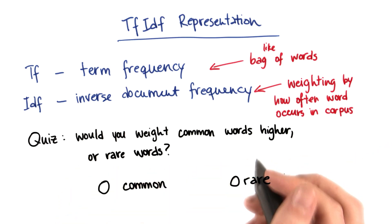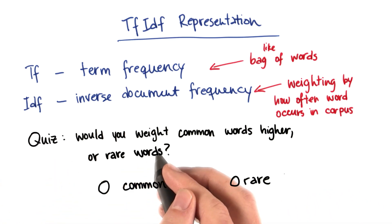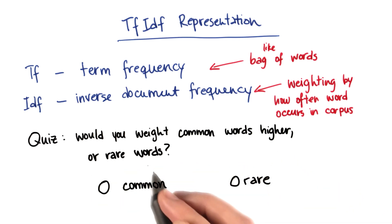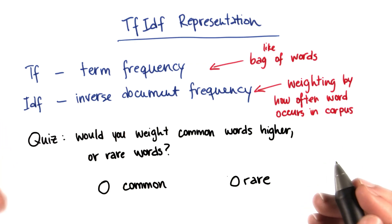The question is this: What do you think makes more sense if you want to be extracting information from these words? Will you give a higher weight to the very common words that occur in many, many documents? Or would you give a higher weight to the rare words, the words that might only occur in, let's say, 10% or 1% of the documents that are present in your corpus?